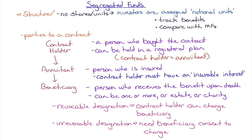Since the assets belong to the insurance company, we can't receive units — that would signify an ownership claim. However, investors need to track performance, so instead of units, investors are assigned notional units. A notional unit is essentially saying: 'if we were to give you units, this is how many there would be — but to be clear, there are no units.' Notional units allow investors to track their benefits and compare performance with mutual funds.